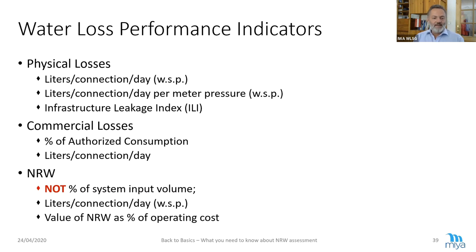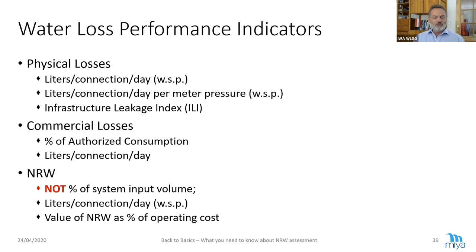Commercial losses can be expressed either as a percentage of authorized consumption or also in liters per connection per day. There's no real consensus and I cannot even tell you which indicator is better — normally I calculate both to really understand the situation. For NRW, we do not want to use percentage of system input volume. For the last 20 years we are on a crusade against the percentage. We will never win this — politicians and media will always continue to talk in percentages. But at least we engineers shouldn't use it ourselves.